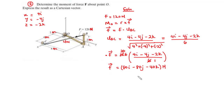After finding F, we focus on the position vector R. For this question, we can define at least two position vectors directed from O to any point on the line of action of the force: one directed along OC (giving RC) and another directed along OB (giving RB).